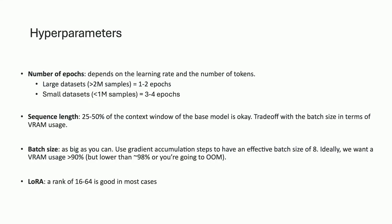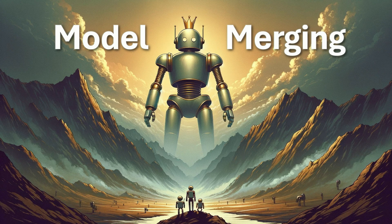Other super important hyperparameters: the number of epochs — depending on the size of the dataset, you can have more or less epochs. Sequence length is also important because it's a trade-off with batch size — the longer the sequence length, the bigger the context window, and the more VRAM you'll use. But you don't need a sequence length as big as the pre-trained model. You also want to maximize batch size to maximize GPU utilization. Then you have the LoRA rank, which is quite easy to fine-tune.